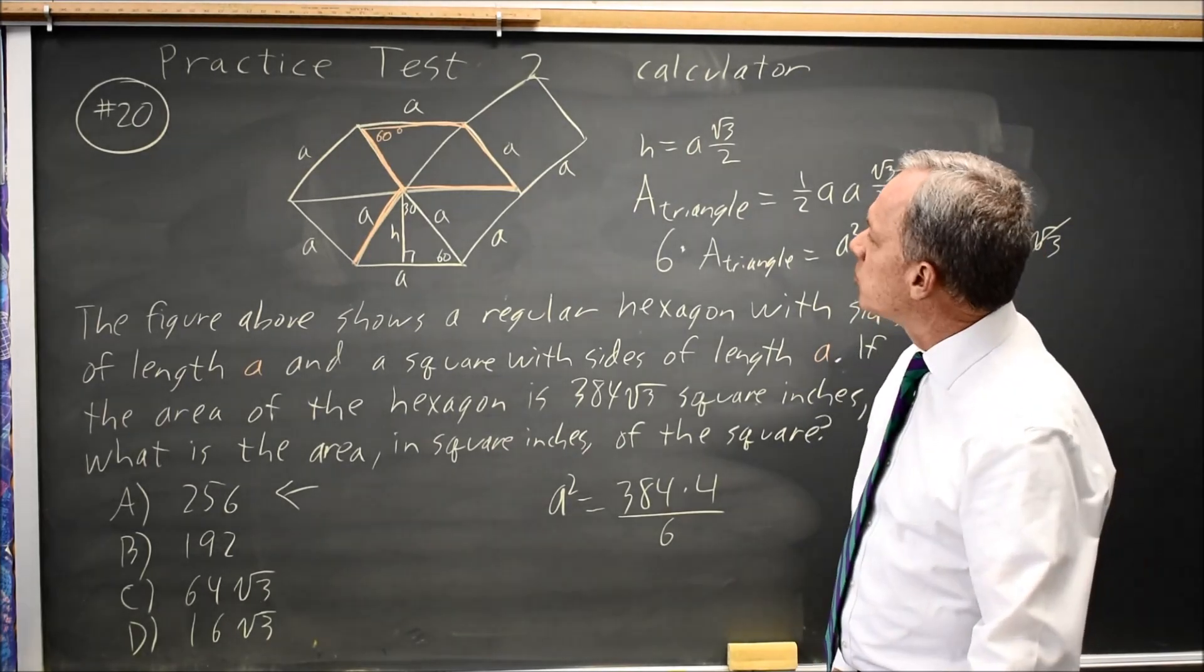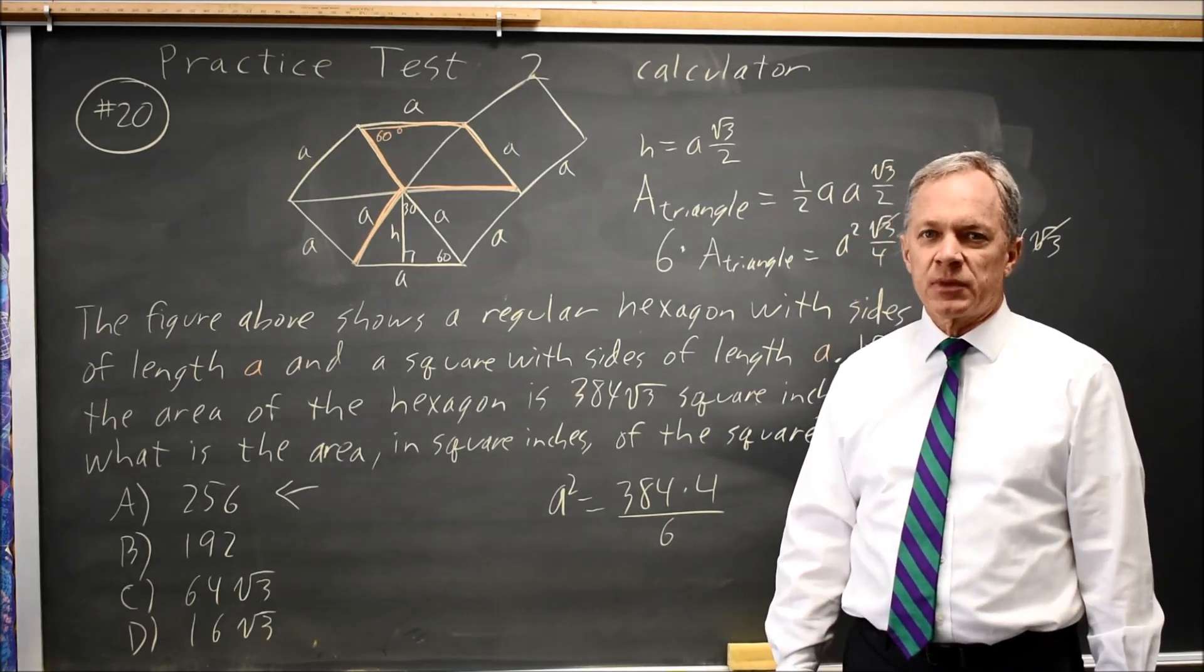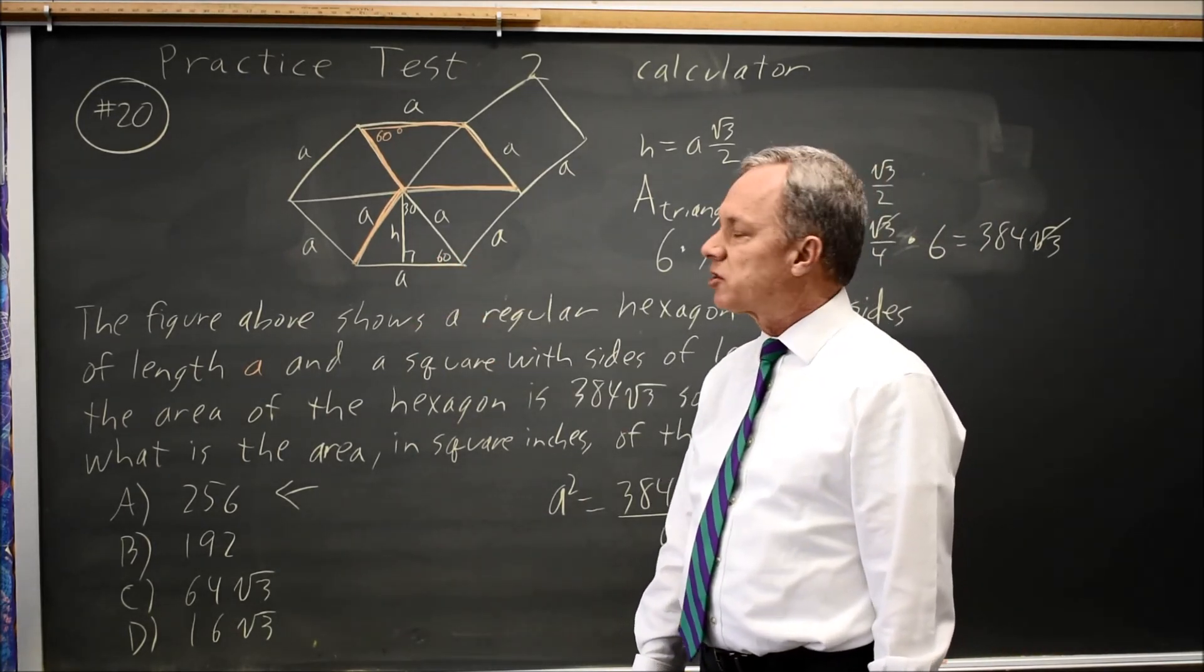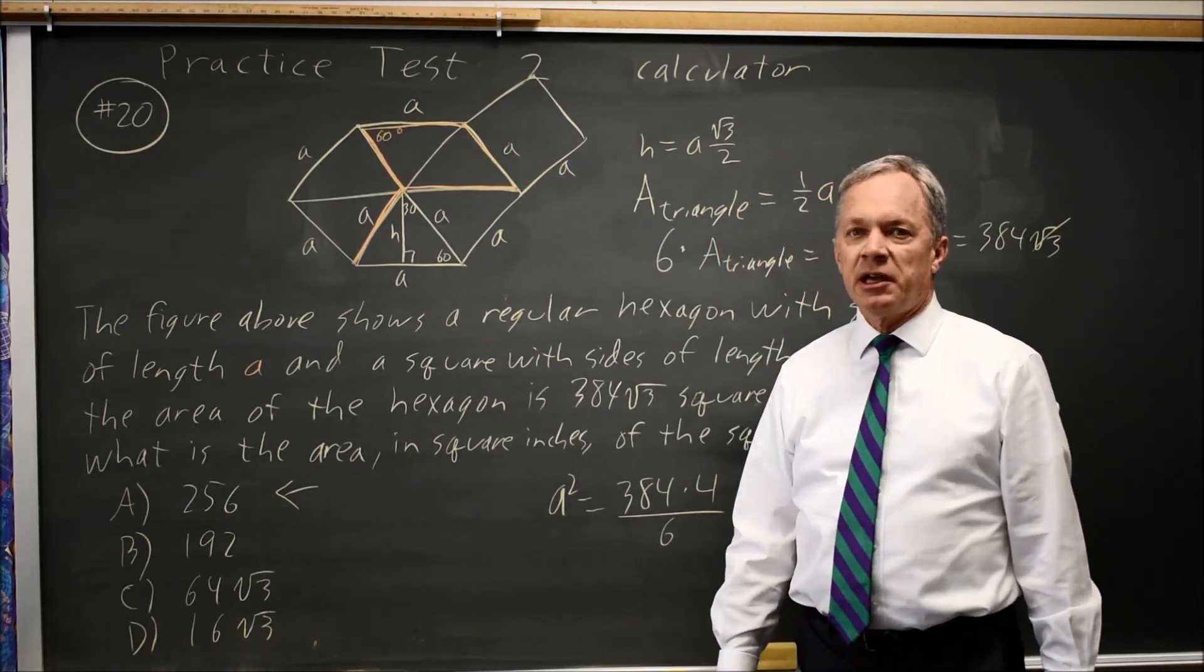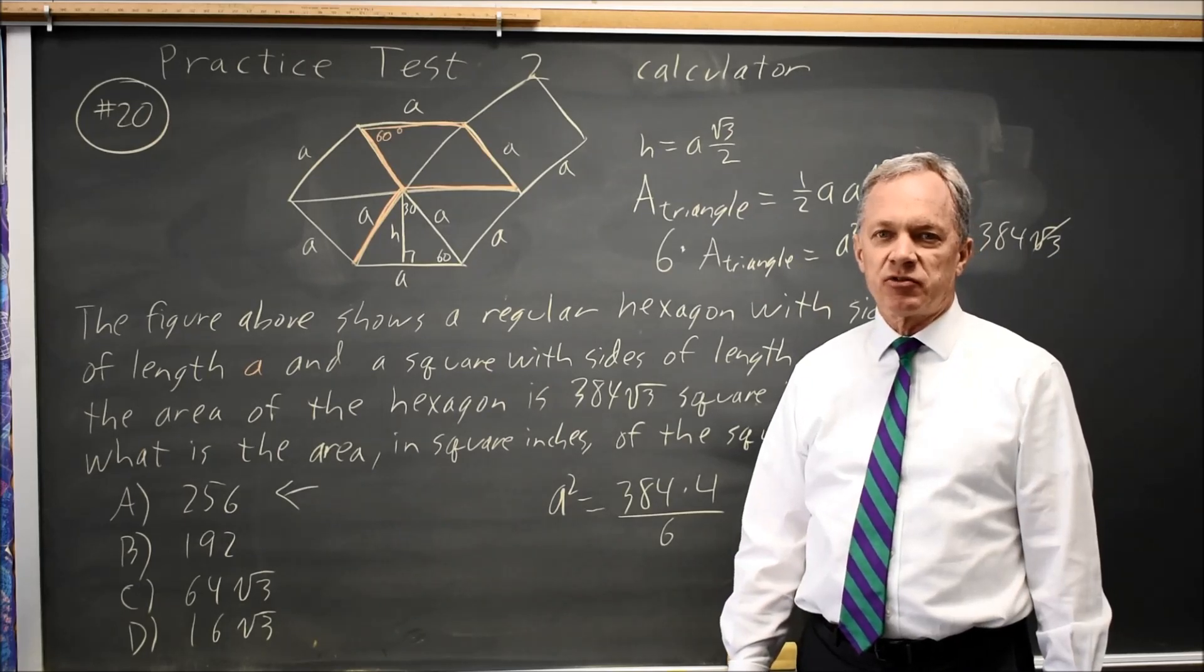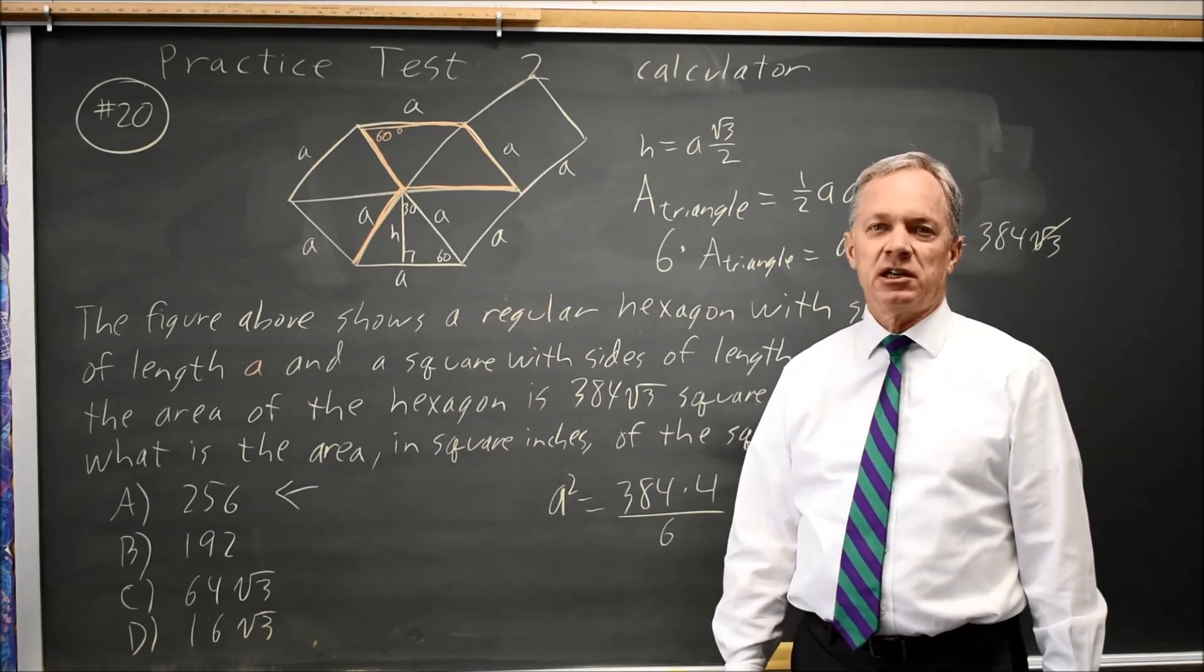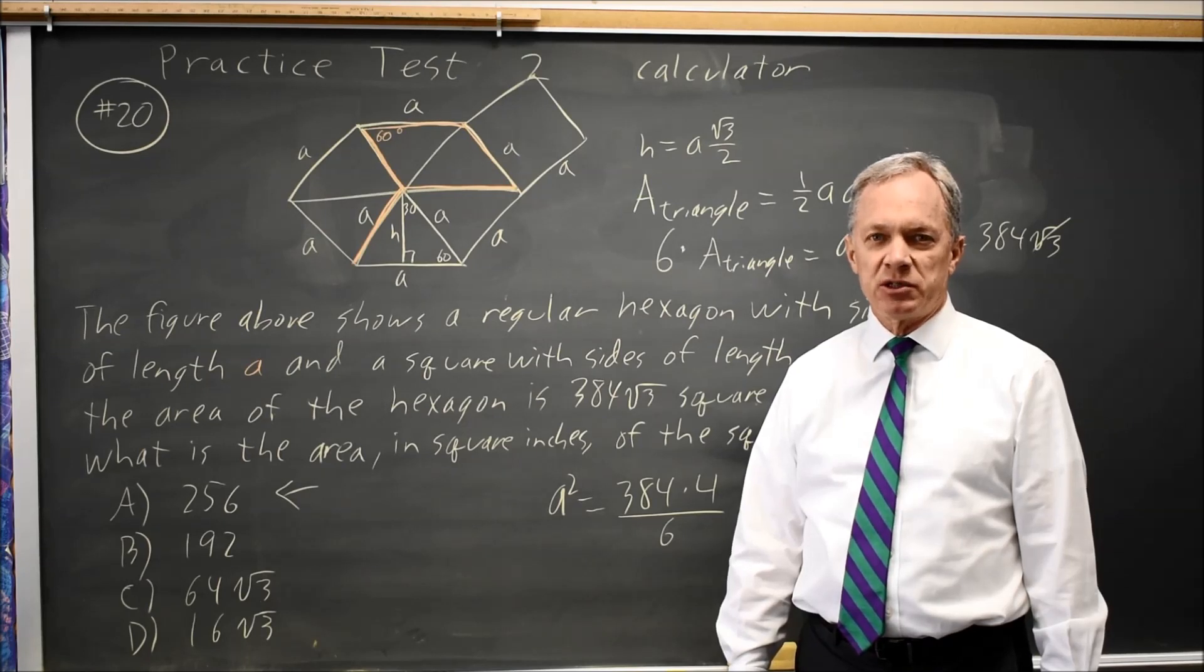Estimation is easier, but the algebraic approach also gives the correct answer. Here we used special right triangles from the formula sheets, area of a square and triangle, and general geometry knowledge that regular hexagons divide into six equilateral triangles. College Board often asks about special right triangles and rectangle area, but this is probably a harder area question than most.